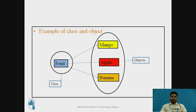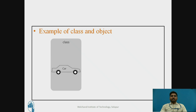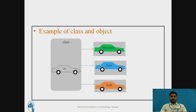You can see one more example of class and object: you can call car a class, and inside the car class any number of objects can be created, like Mercedes, BMW, and Audi — these are called objects. Objects are created based on real-life entities and can be created any number of times.